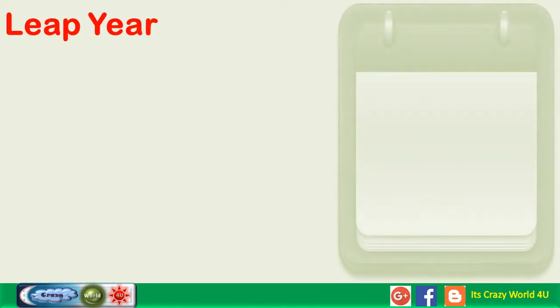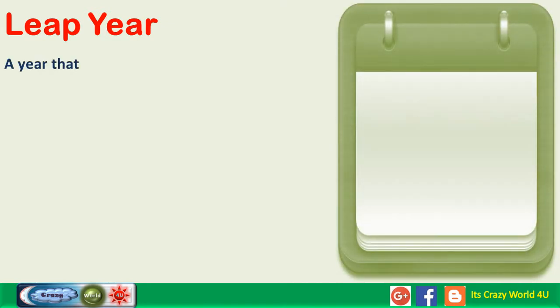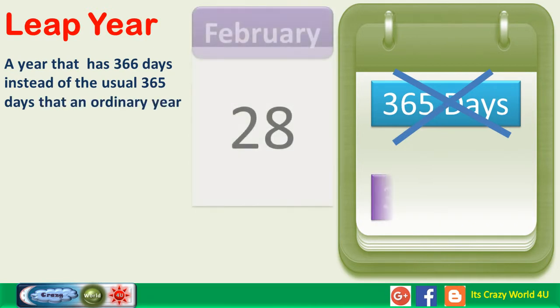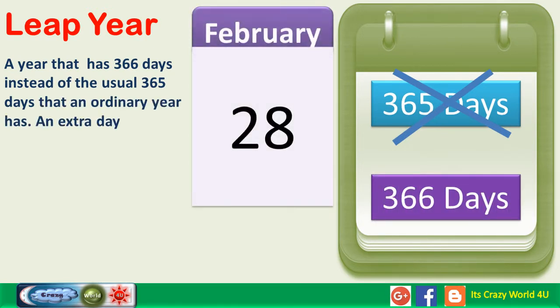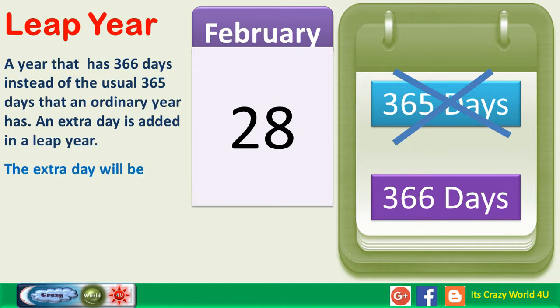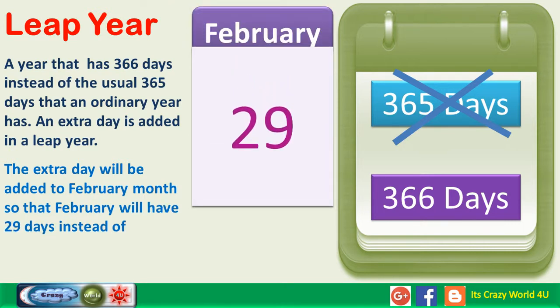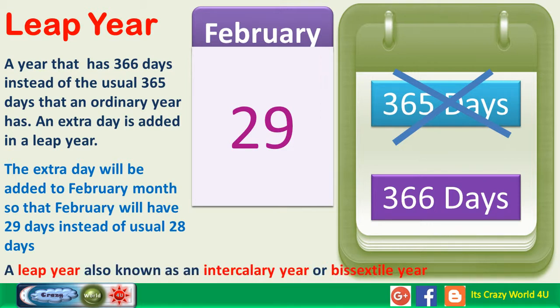Leap Year. A year that has 366 days instead of the usual 365 days that an ordinary year has. An extra day is added in a leap year. The extra day will be added to February month, so that February will have 29 days instead of the usual 28 days. A leap year is also known as an intercalary year or bisextile year.